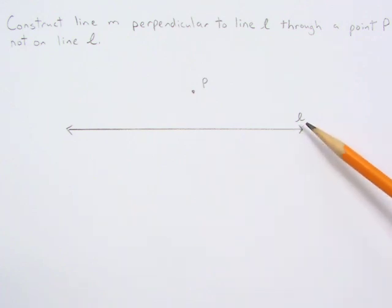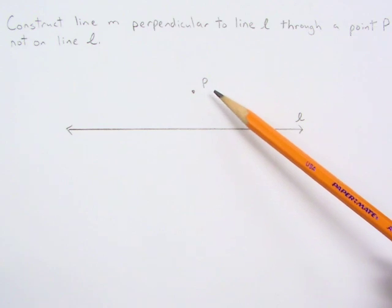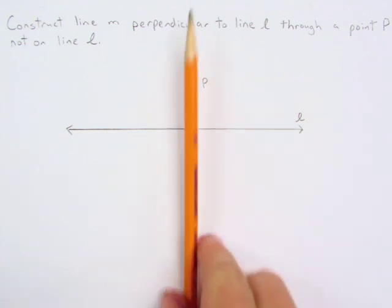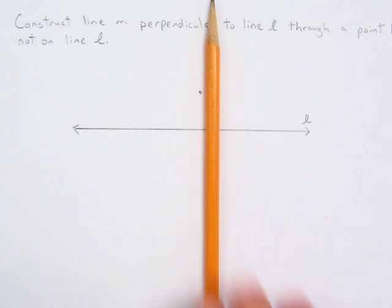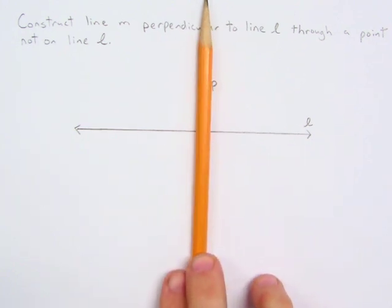So here you can see we have line L, and point P is not on this line, and we basically want to be able to construct a perpendicular line just like this.